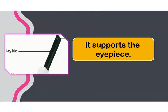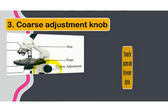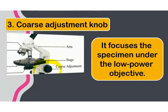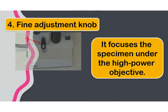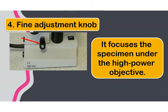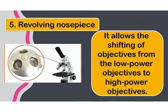Next, the coarse adjustment knob. The coarse adjustment knob focuses the specimen under the low power objective. And the fine adjustment knob focuses the specimen under the high power objective.